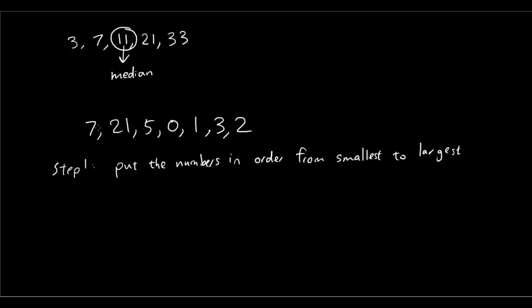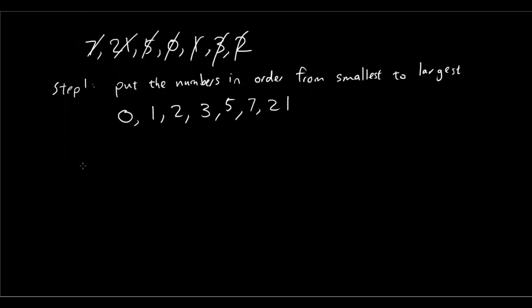So the numbers from smallest to largest, well, we have 0 is the smallest. And then we have 1, 2, 3, 7, oops, sorry, we have 5 there, 5, 7 and 21. So now I have put the numbers in ascending order from smallest to largest.